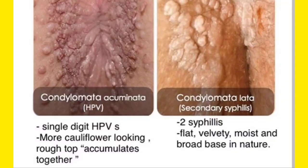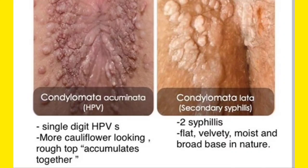Basically, you have to look at the picture. Condyloma accumulata, which you can see on the left side of the screen, is an HPV infection — caused by human papillomavirus. It looks cauliflower-like with a rough top, and the lesions accumulate together. That is why it is known as accumulata — because it accumulates together just like a cauliflower.